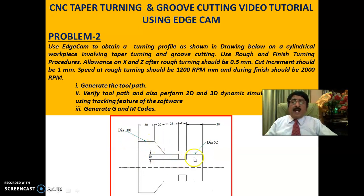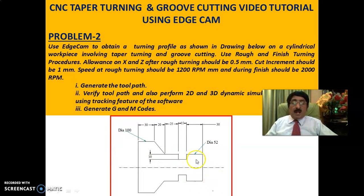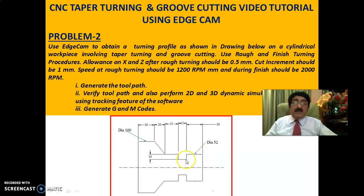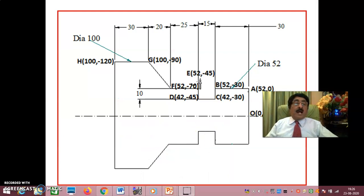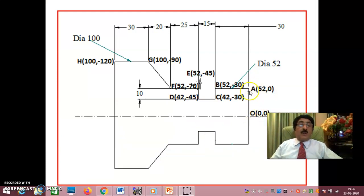This is a typical problem given in many universities, VTU, and autonomous institutions. X is always the diameter and Z is always the axis. The diameters are 52 and 100; Z coordinates are minus 30, minus 15, minus 25, minus 20, minus 30 and so on. Using a common origin, I have calculated dimensions for all the key points: 0,0 then 52,0.